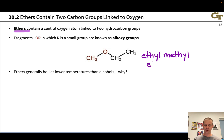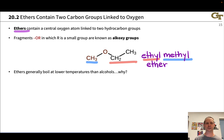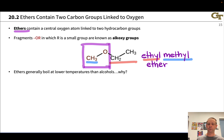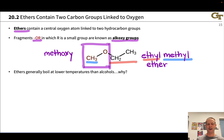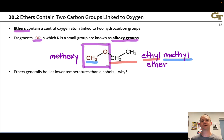Ethers are often named by referring to the two carbon groups connected to that central oxygen. We have a methyl group on one side and an ethyl group on the other, and we list these in alphabetical order — which is why ethyl is listed first. The OR fragment, when the R group is relatively small, is referred to as an alkoxy group. For example, this group is known as a methoxy group, since it has a methyl connected to an oxygen.